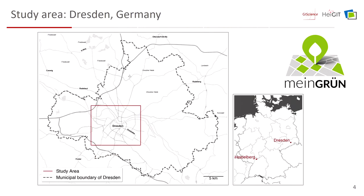In the Main Grün project, we have two study sites — two pilot cities: Heidelberg, where we are right now, and Dresden. In this talk, we'll focus on Dresden and look at the study site in the center of Dresden.